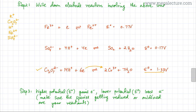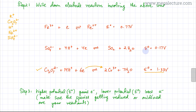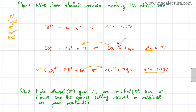Starting over again, the next least potential is 0.17 volts. But if we select this, SO2 would be the one losing electrons. We don't have any SO2 in our reactants, so this electrode reaction cannot be applied either. SO2 is not present, so we get rid of this reaction as well.